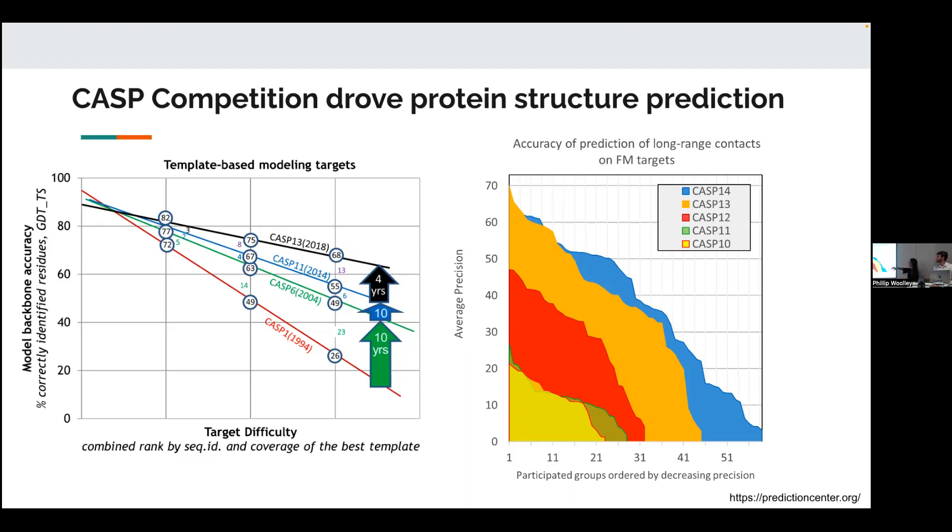And there were several different categories. There were some that were template based. There were other ones that were trying to predict contacts between proteins. And then there were other ones called ab initio, which was completely from slate, like no template at all. How well could you predict these new proteins? And as you can see, the field really jumped over the years.